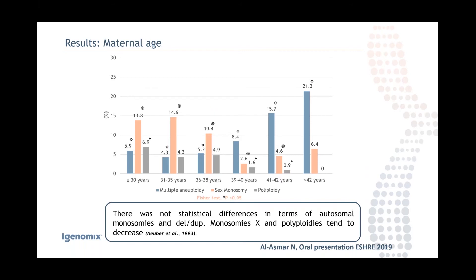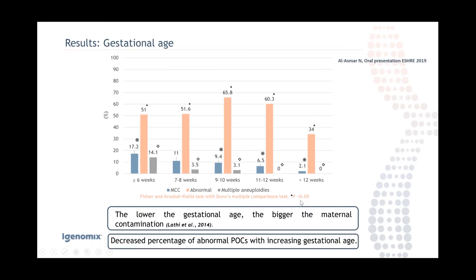Regarding multiple aneuploidy — defined as two or more chromosomal abnormalities in the products of conception — below 38 years old, you have around 4–6% multiple aneuploidy. When patients are 39 years old or older, this increases up to 21% in patients over 42 years old. Monosomies for chromosome X and polyploidy tend to decrease as patients get older.